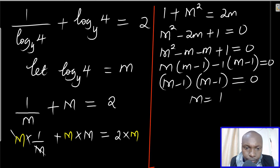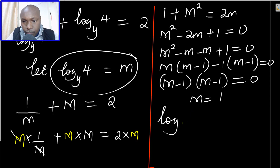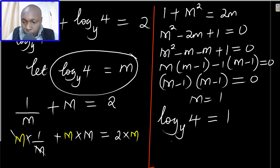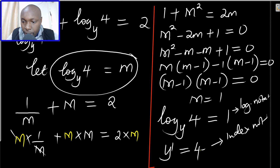Now after getting m, recall that log of 4 to the base of y equals m, and m is 1. Since this is written in logarithmic notation, writing it in index notation gives y raised to the power 1 equals 4. Therefore y equals 4. As simple as that. Thank you.